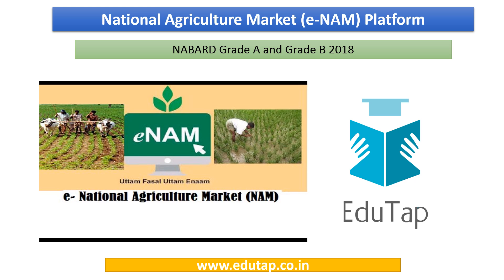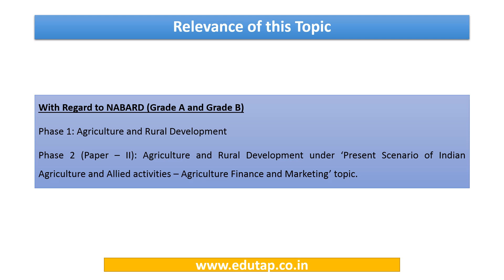Hello friends, today's topic of discussion is National Agriculture Market, i.e., the E-NAM platform. The relevance of this topic with respect to NABARD Grade A and B will be in Phase 1, Agriculture and Rural Development, and Phase 2, Paper 2, Agriculture and Rural Development under the Present Scenario of Indian Agriculture and Allied Activities under the Agriculture Finance and Marketing topic.